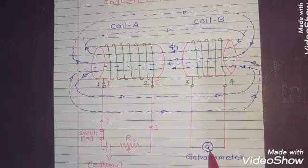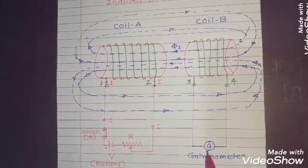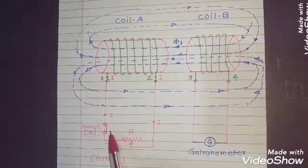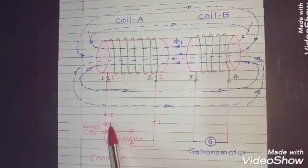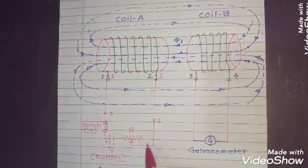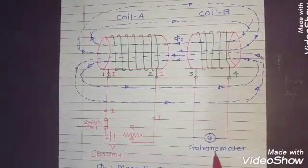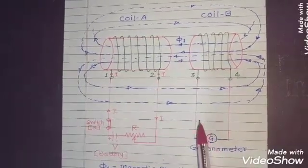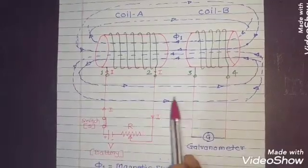It means that we can have the mutual induction concept either by two ways. First, you close the switch, then you open it. In second case, you keep the switch closed, then you go on changing the current through the coil. In both cases, we will see that there is an EMF induced in the coil B and this is being referred as mutually induced EMF.